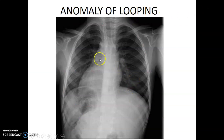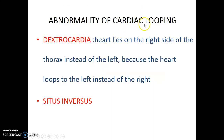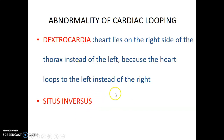If looping occurs in the opposite direction, the result is dextrocardia, where the heart lies on the right side of the thorax instead of the left, because the heart loops to the left instead of to the right. It can occur in situs inversus, where all organs in the body are in the opposite position — for example, the liver being mainly on the left instead of the right — affecting both abdominal and thoracic organs.